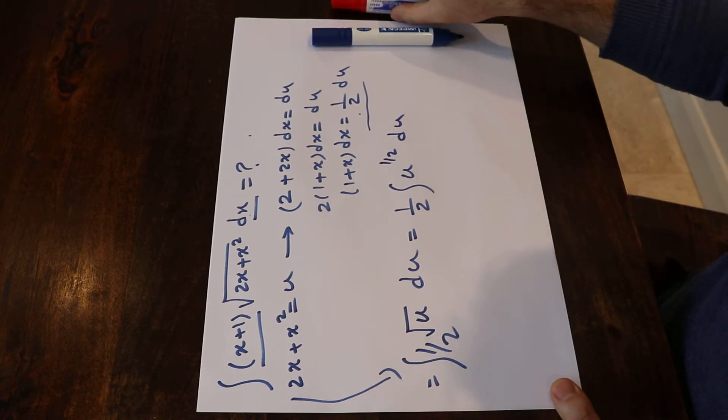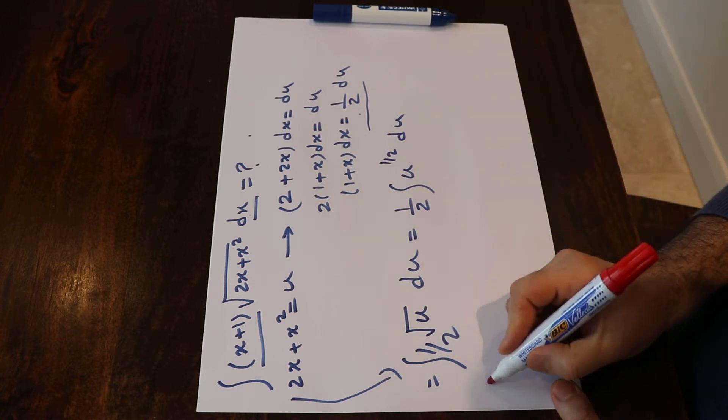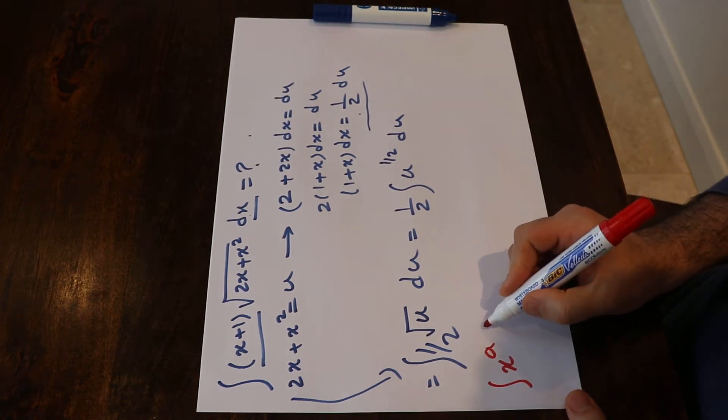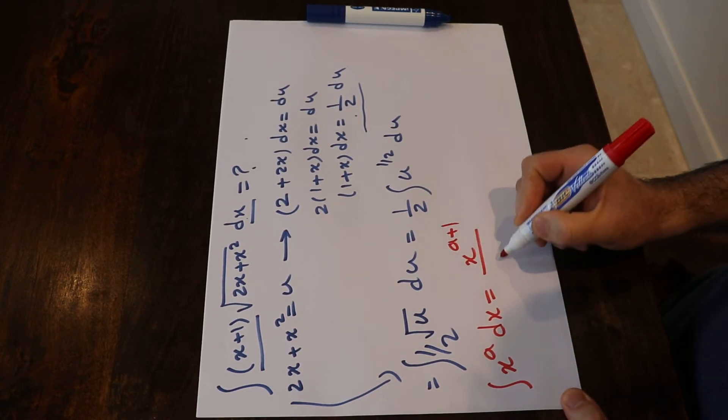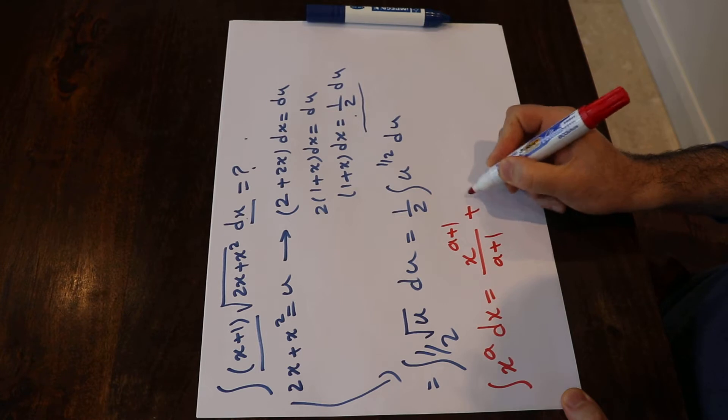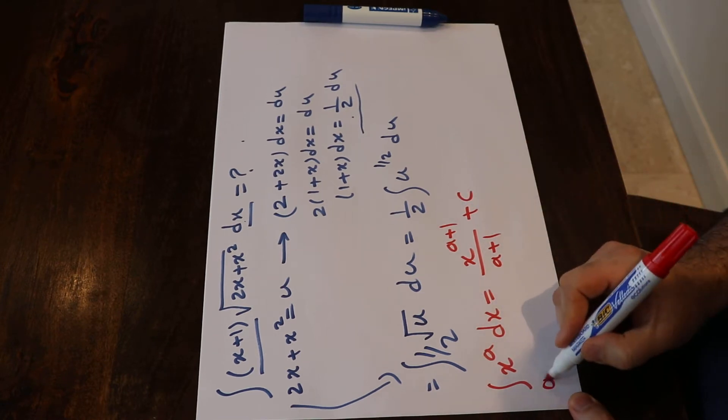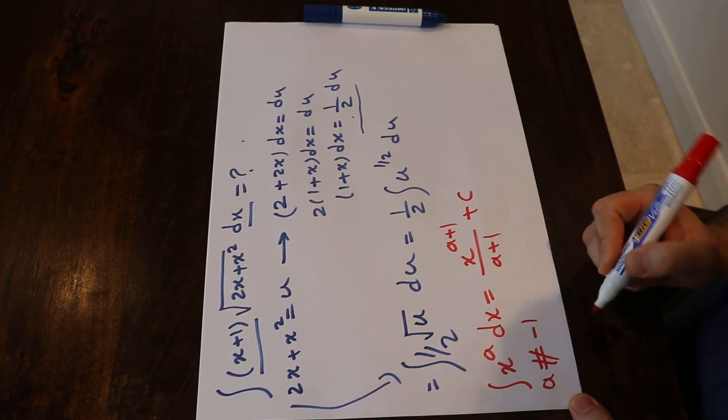And to solve this integral, you need to know one formula: the integral of x^a dx will be equal to x^(a+1)/(a+1) + c, that's the constant of the integral, assuming a is not equal to -1.